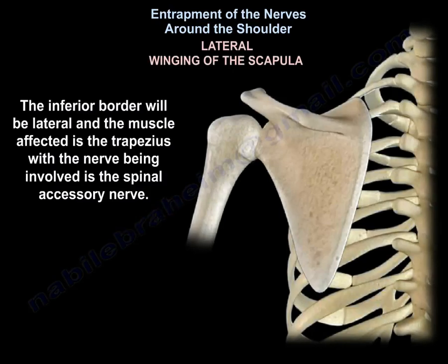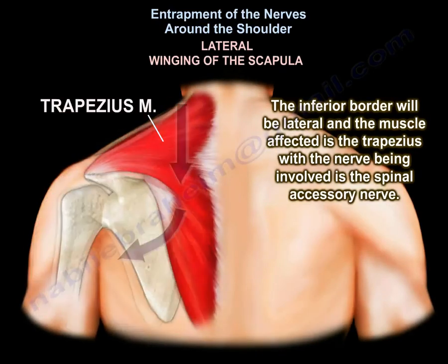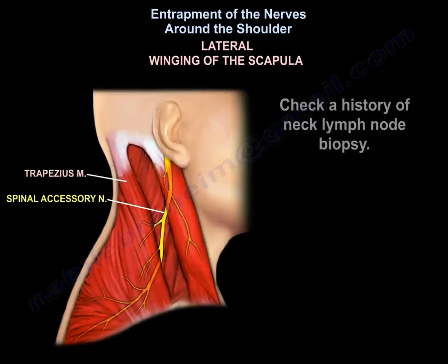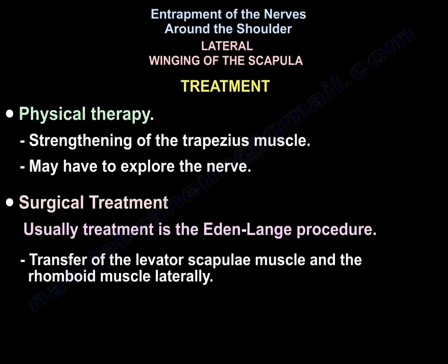In lateral winging of the scapula, the inferior border will be lateral. The muscle affected is the trapezius, and the nerve involved is the spinal accessory nerve. Check for a history of neck lymph node biopsy. Treatment is physiotherapy and strengthening of the trapezius. You may need to explore the nerve, but the usual treatment is the Eden-Lang procedure, which is transfer of the levator scapulae muscle and the rhomboid muscle laterally.